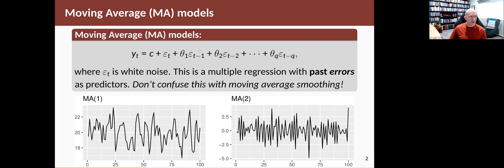And the coefficients of this are called theta, which is another Greek letter that gets used in this context. So you can see that it looks like a regression, except instead of regressing against things that you've observed, you're regressing against errors.